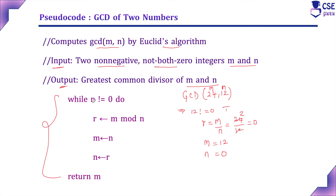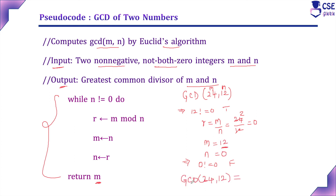In the next iteration, check N not equal to zero — N is now zero, so the condition fails. The loop exits and it prints M as the result. M is now 12, so the output is: GCD of 24 and 12 is 12.